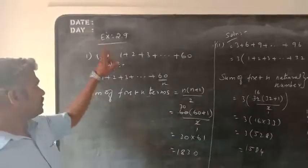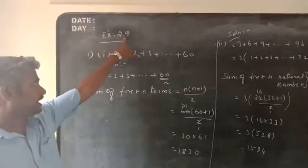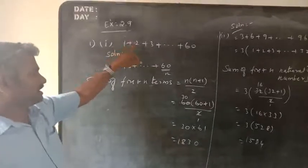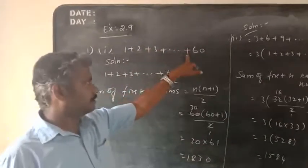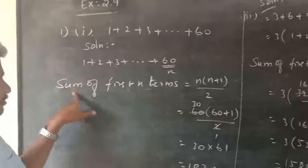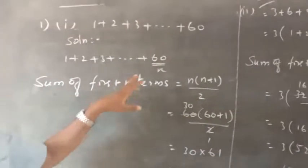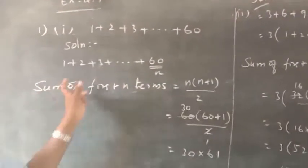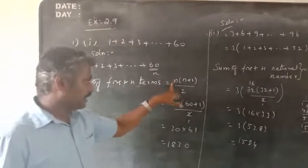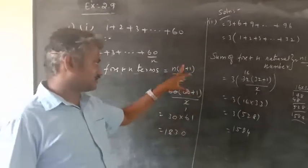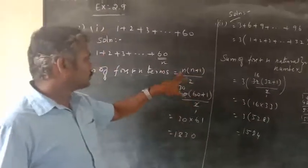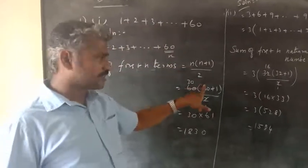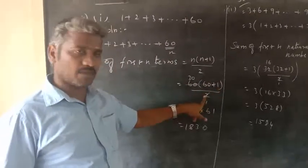Good morning students. Exercise 2.9, first row, my first sum: 1 plus 2 plus 3 plus etc. plus 60. So sum of first n natural numbers is n into n plus 1 by 2. This is the formula. So n value, last term is 60, so 60 into 60 plus 1 by 2.